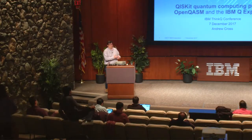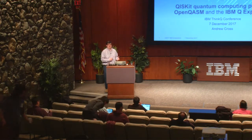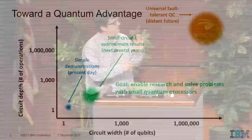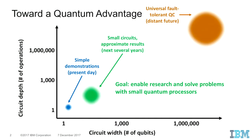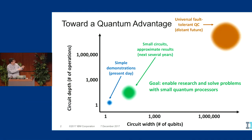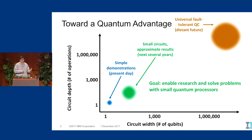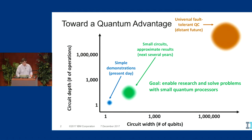I'm Andrew Cross. I'll talk today through the components in our software stack and talk to the IBM Quantum Experience and the language we use to communicate with it. Before I begin I'd like to give some bounds on the problem we're interested in solving — the scope of the software we're trying to write. Where we are today we're in this realm of simple demonstrations on small numbers of qubits, moving toward larger systems where we can run small circuits and do approximate computations, but we're very far from a universal fault-tolerant quantum computer. Our goal is to write software that targets this kind of space to enable research and to look for advantage with these small quantum processors.